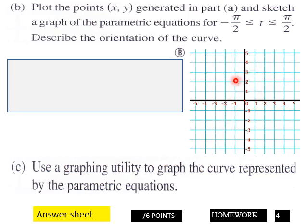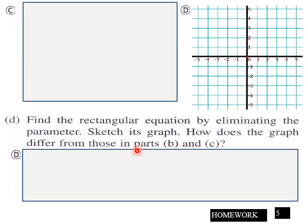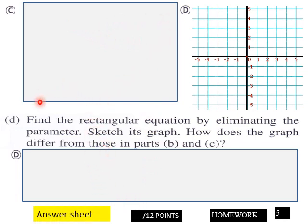And then c and d here continues from the previous. Part d: find the rectangular equation by eliminating the parameter. Sketch its graph here. How does the graph differ from those in parts b and c? So put that here, and this is your d here for that.